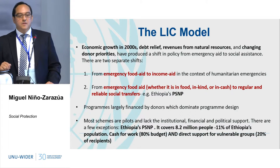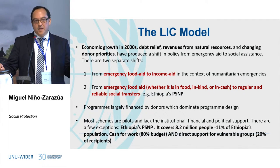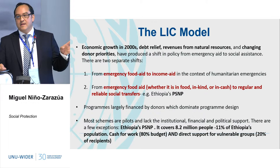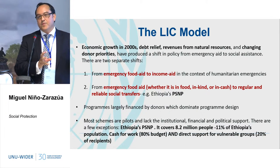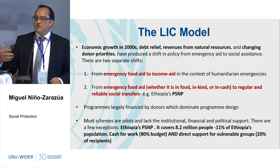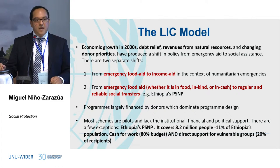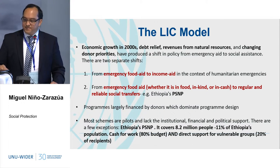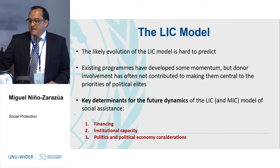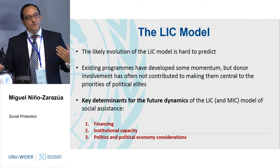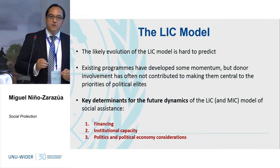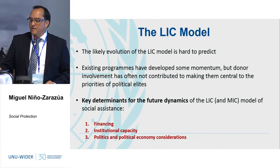There are two main shifts we observe. One is the shift from food aid to cash transfers in the context of humanitarian assistance, which is important but not necessarily in the domain of social assistance — which usually deals with much longer-term, regular, reliable transfers to households in poverty and vulnerability. This typology is complex, and it is very hard to predict how the LIC model will transition. We don't have a clear idea about how these institutions will evolve and which direction they will take in the following years.